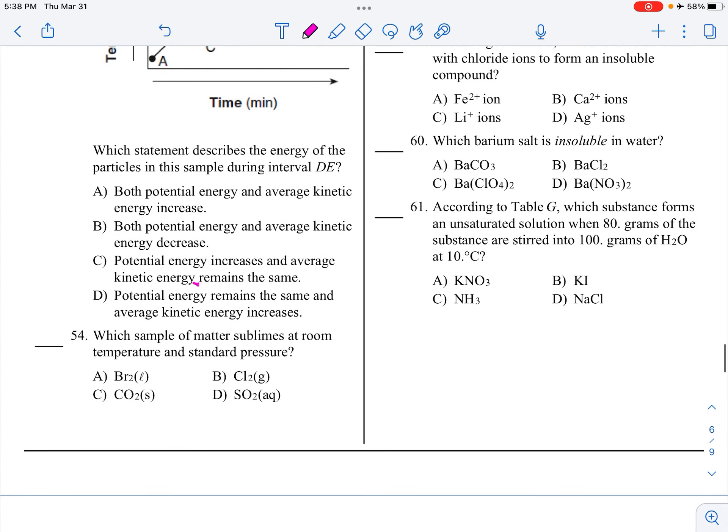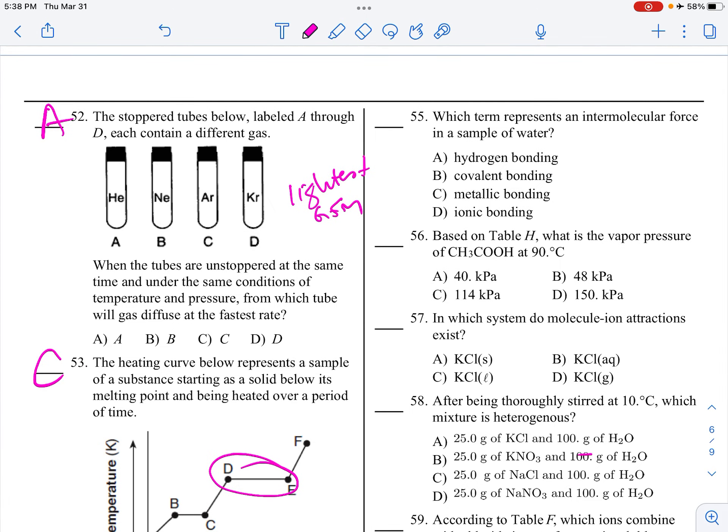Which sublimes at room temperature and standard pressure? That would be dry ice, solid carbon dioxide. Sublimation is solid straight to a gas. We talked about dry ice, which is CO2 solid, and also mothballs. Which term represents an intermolecular force in a sample of water? The intermolecular force is hydrogen bonding, which is between very polar molecules, the partial positive side with the partial negative side.